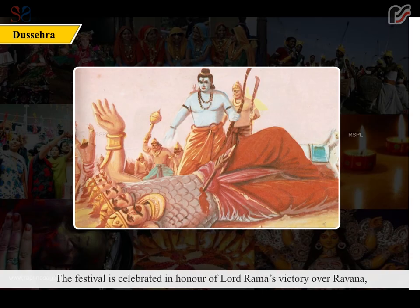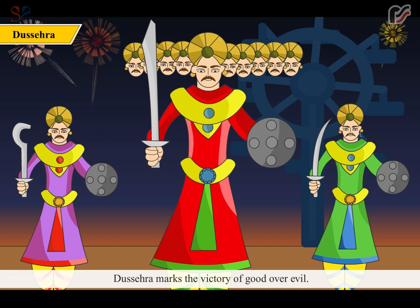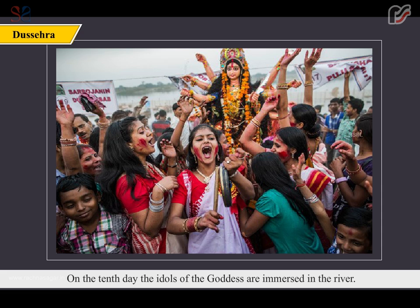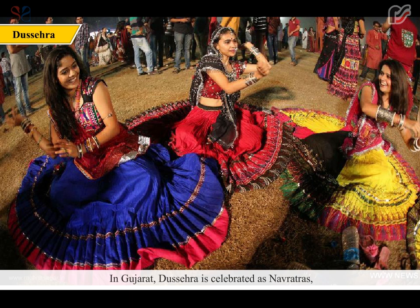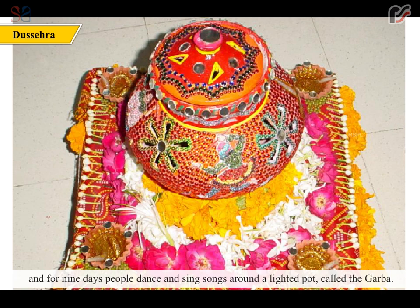Dussehra is a festival celebrated in honour of Lord Rama's victory over Ravana, over a period of ten days. The Ramlila is staged for the first nine days, and on the tenth day, the effigies of Ravana, Meghnath, and Kumbhakarna are burnt. Dussehra marks the victory of good over evil. In West Bengal, it is celebrated as Durga Puja, where people worship idols of Goddess Durga, and on the tenth day, the idols are immersed in the river. In Gujarat, Dussehra is celebrated as Navratras, and for nine days, people dance and sing songs around a lighted pot called the Garba.